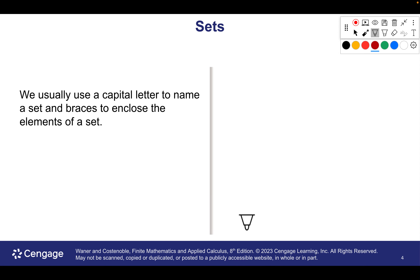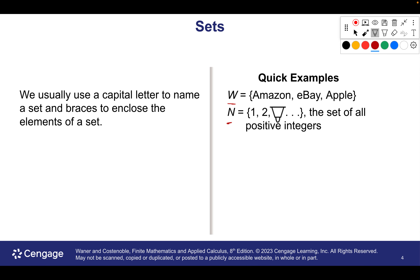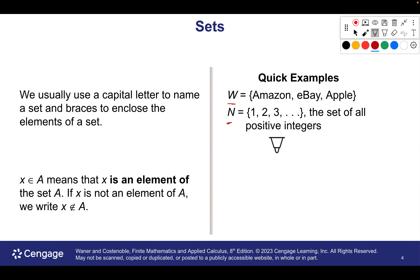We use capital letters. Here's an example of a set: Set W equals Amazon, eBay, and Apple. Set N is the numbers 1, 2, 3 with three dots — what do those three dots mean? Keep going. So one set is infinite — it keeps going. The other set, W, is what we would call a finite set. It has a limited number of things, so you could actually count it. We can't really count the number in set N because it goes on forever — it's uncountable. That's what infinite is.